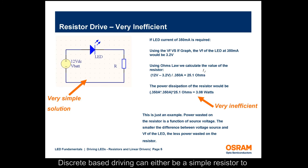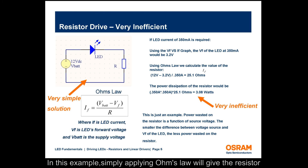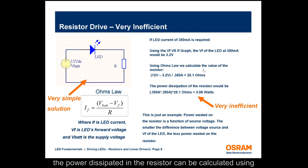Discrete based driving can either be a simple resistor to regulate LED current, or it can be based on a transistor. In this example, simply applying Ohm's law will give the resistor value for a specific current, which is 350 milliamps in this case. Also, the power dissipated in the resistor can be calculated using the I squared R equation.